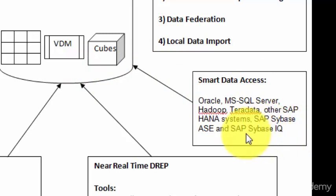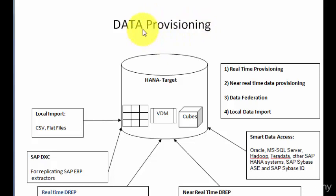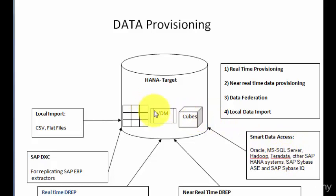Out of the box, HANA provides certain drivers to talk to most of these sources, so you can get up to speed quickly using data federation. To clarify: data federation is the capability to keep data in the source system, bring the metadata to the target system, model it, and provision it to the reporting layer. When a query comes in, the query engine realizes the data is sitting elsewhere, sends that part of the query to the actual source system, retrieves the data, and the collation and other activities are done in HANA.